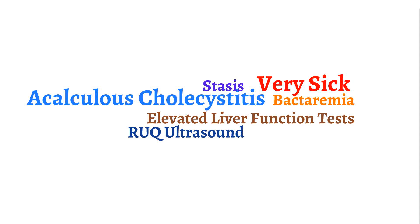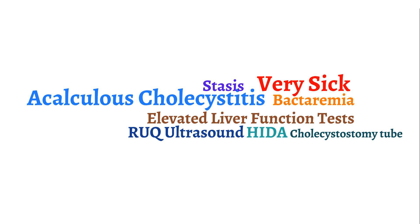If the ultrasound is equivocal, obtain a HIDA scan, which has near 100% sensitivity. Once the diagnosis is made, it is important to start broad spectrum antibiotics. The next step is to consider a cholecystostomy tube versus a cholecystectomy. Since these patients are very sick, a cholecystostomy tube is usually preferred. This drain is placed by an interventional radiologist who enters the biliary tree and gallbladder to allow for adequate drainage of the biliary system. Once the patient is stable enough, they will need a cholecystectomy.